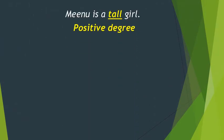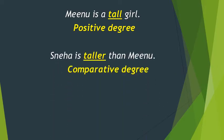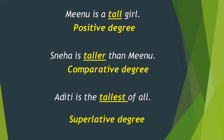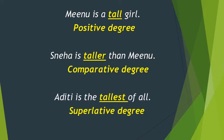Let's see the examples of all three degrees together. 'Minu is a tall girl' — we are not comparing anyone with Minu, so it is positive degree. 'Sneha is taller than Minu' — we compare the height of Sneha with Minu, so it is comparative degree. 'Aditi is the tallest of all' — among all the children, Aditi is the tallest, so it is superlative degree. So: tall, taller, and tallest.